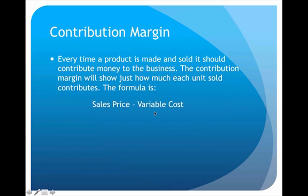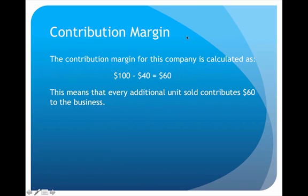That formula will tell us how much the sale of that particular unit of product has contributed to the business. For example, a product with a $100 sales price and a $40 variable cost per unit has a contribution margin of $60. In other words, every additional unit of that product that is sold contributes $60 toward the business.